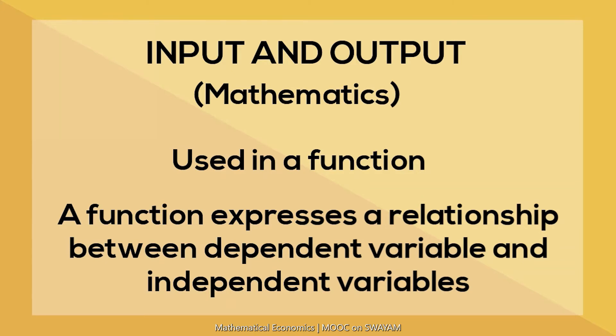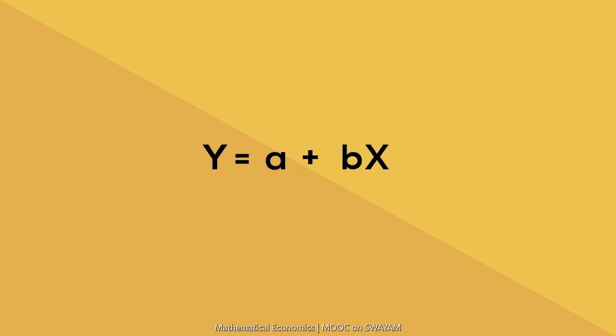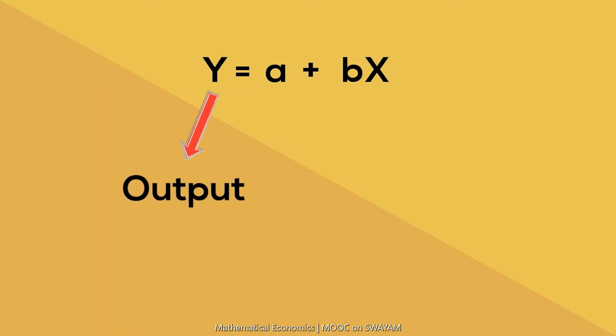In other words, the dependent variable may be termed as the output, and the independent variable or variables may be termed as the input or inputs. For example, in this function y equals a plus bx, y is the dependent variable and is the output, and x is the independent variable and is the input of the given function.